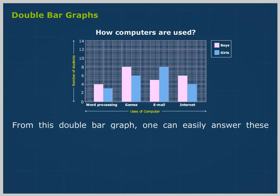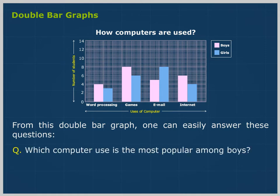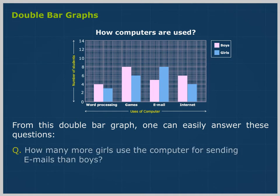From this double bar graph, one can easily answer these questions. Which computer use is the most popular among boys? Games. How many more girls use the computer for sending emails than boys? 8 minus 5 is equal to 3.